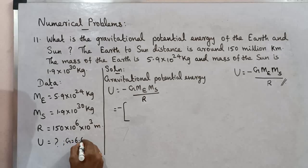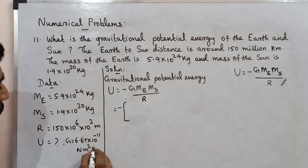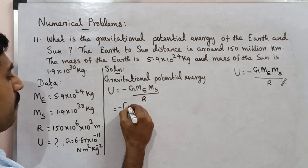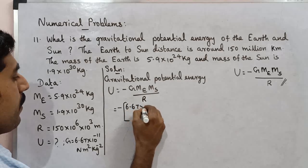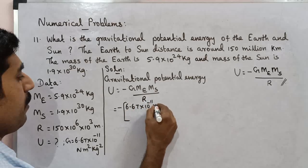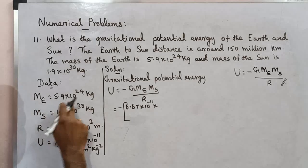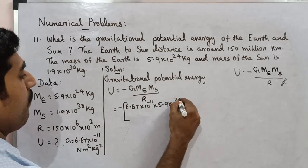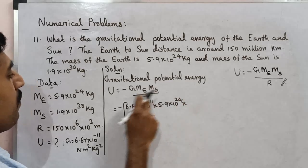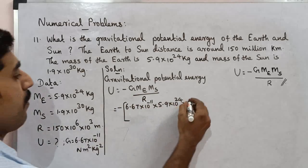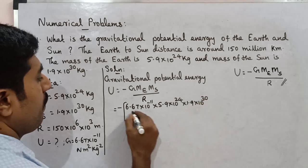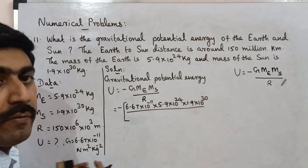U is equal to 6.67 into 10 power minus 11 Newton meter square kilogram power minus 2, into mass of Earth 5.9 into 10 power 24, into mass of Sun 1.9 into 10 power 30, divided by the distance.